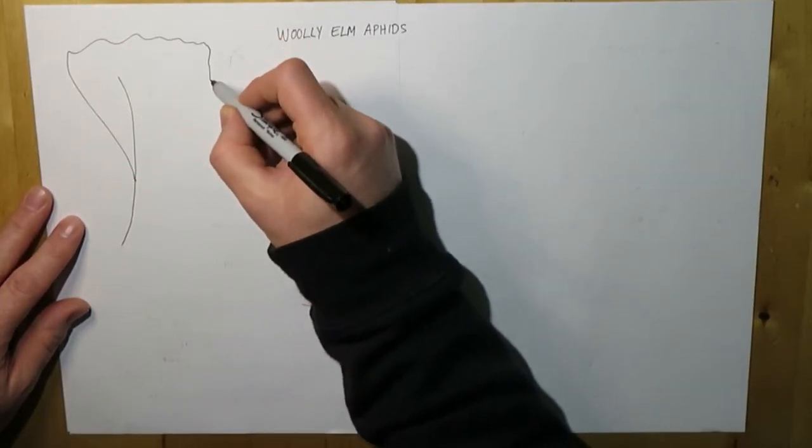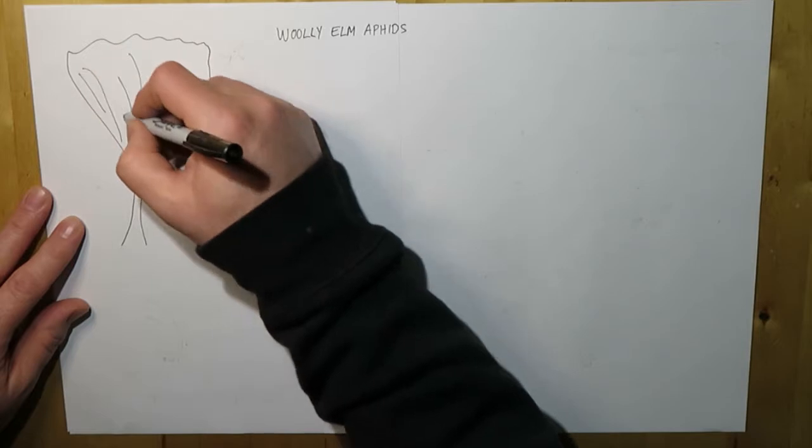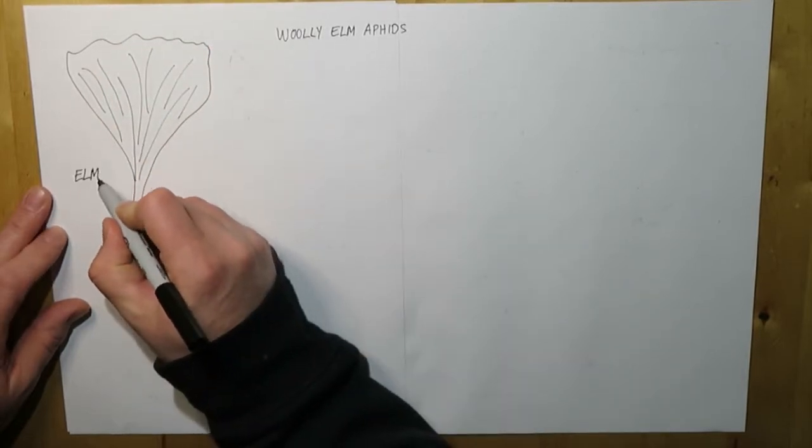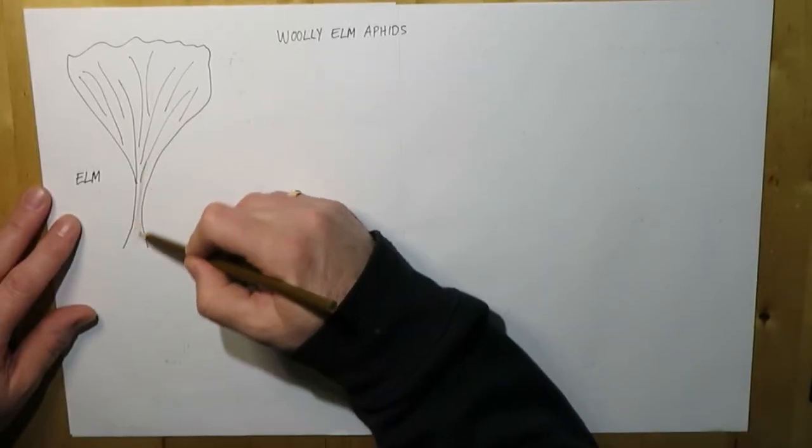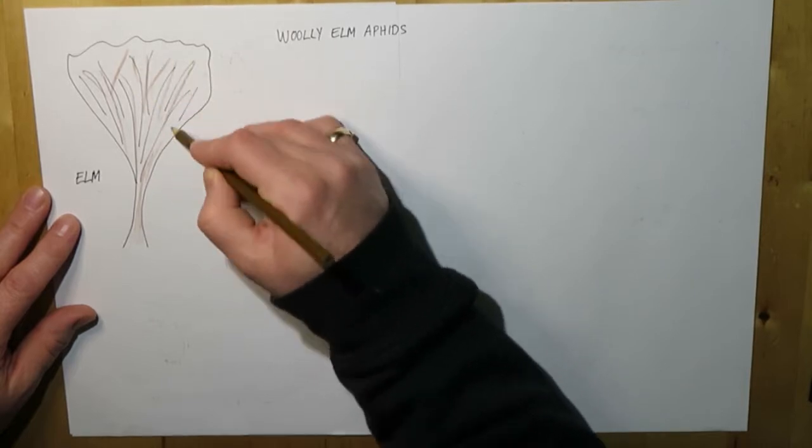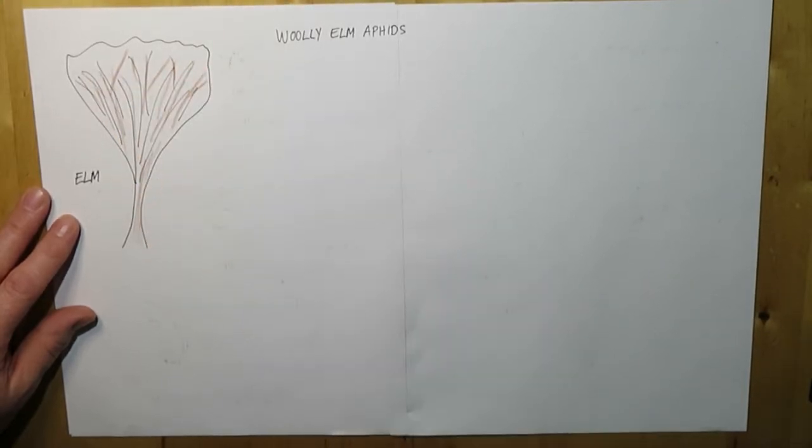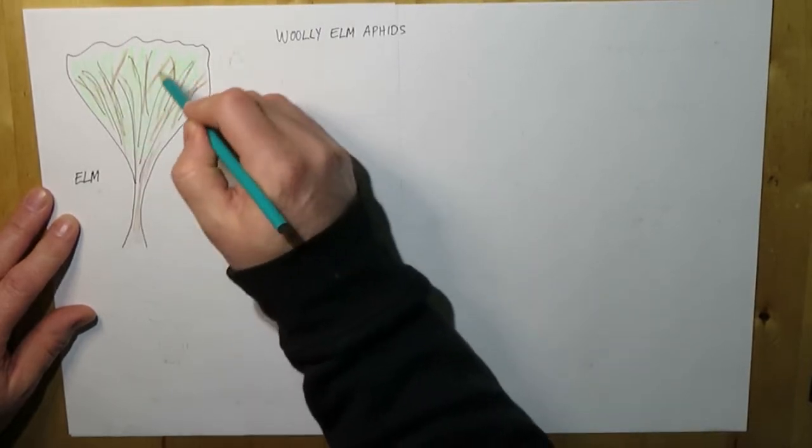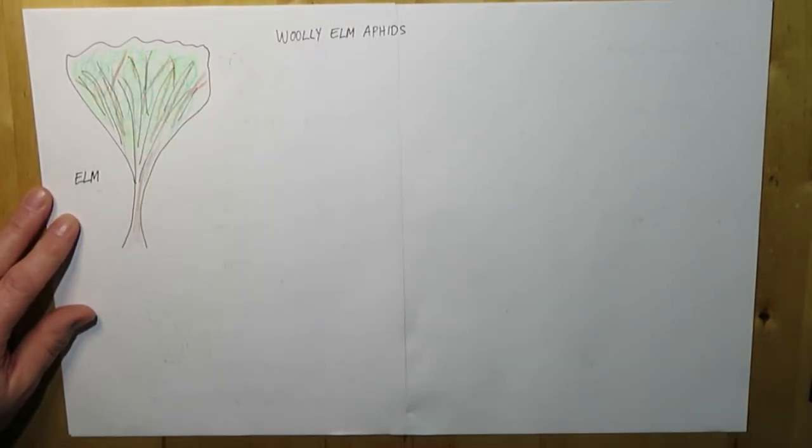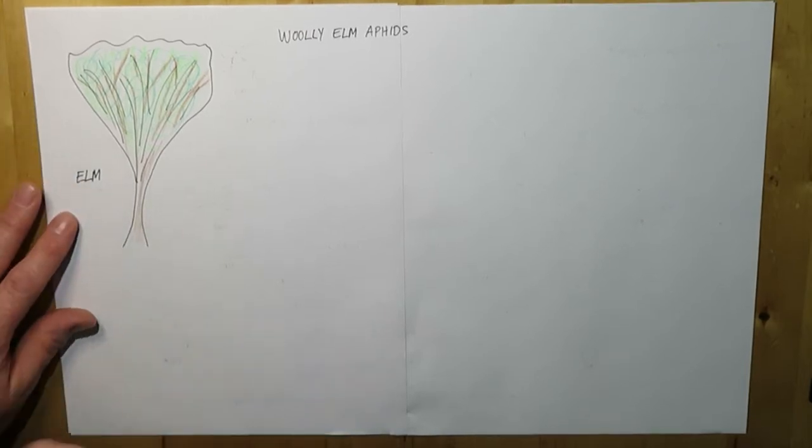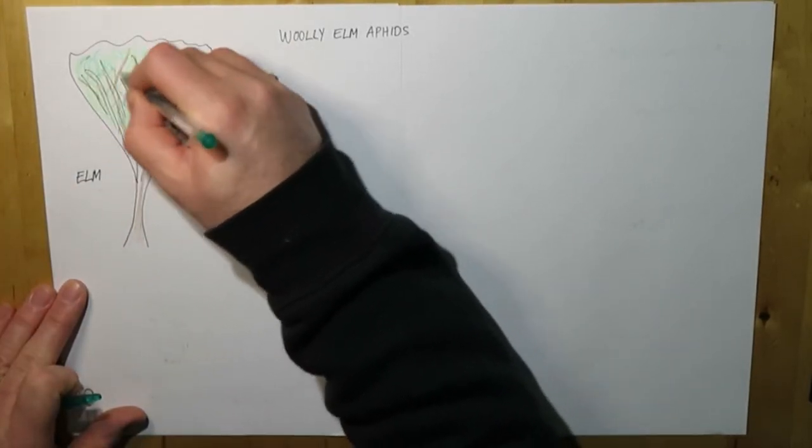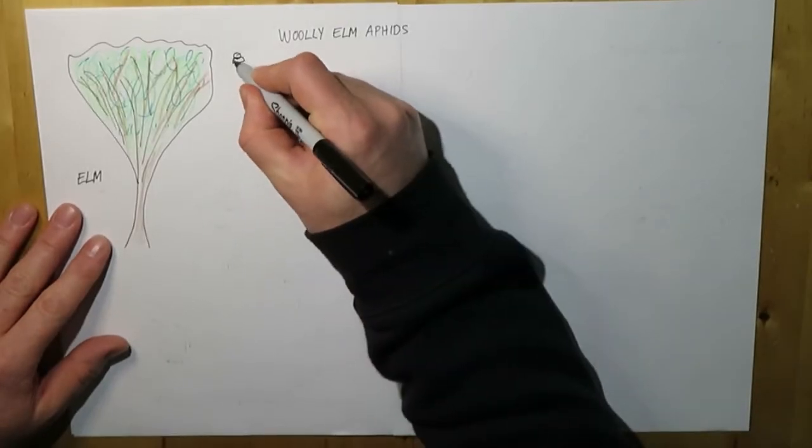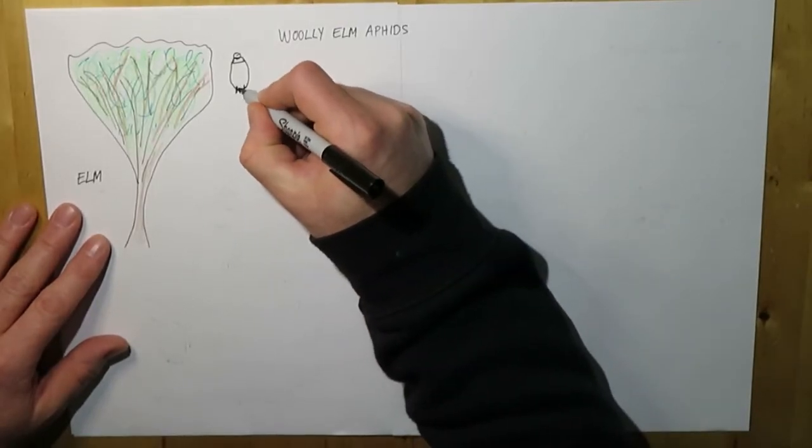The first host is on elm, and so in the early part of the year and at the end of the year, the aphid either is on the elm or travels back to the elm. But the focus of this pest in this particular video is the effect it has on the saskatoon berry, which is the other host. And it can cause quite a bit of issues for some of the younger saskatoon berry plants.